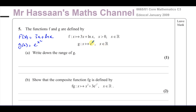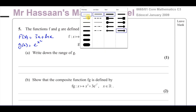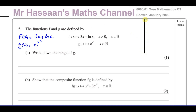It says write down the range of G — no calculation involved, just one mark. But it's a question where a lot of students will make mistakes if they don't think about what the graph of this function looks like. Writing down the range of a function is always related to how the function looks.